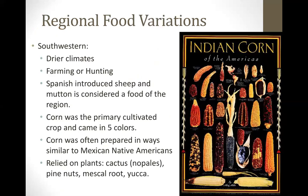Southwestern regions were known for beans, chili peppers, corn, and squash — the staple three plus chili peppers. These were drier climates where most people farmed or hunted. There were five varieties of corn they primarily ate: white corn used for meal, yellow corn roasted and eaten off the ear, red corn found in the south, blue corn found in the west, and black corn used for specialty dishes such as Hopi bread, tortillas, pozole, or tamales.